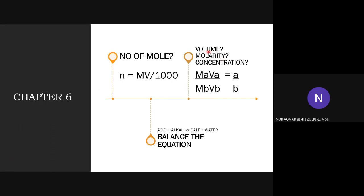If the question asks you about volume, molarity, or concentration without any relationship with number of mole, you must use this formula: MAVA over MBVB equals A over B. We will discuss how to use this kind of formula after this.